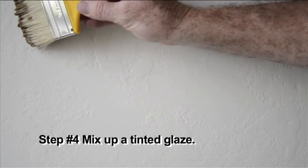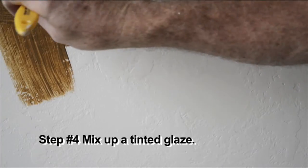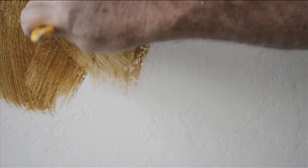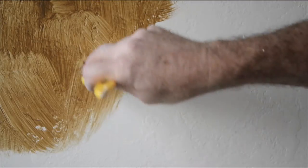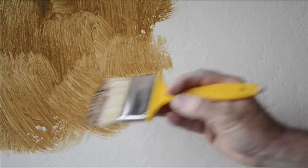After our second coat of latex paint is allowed to dry, we can mix up a tinted glaze with open-time glaze and about 25% latex paint. That's a good starting ratio. You can always add more glaze if you want a more translucent effect, or a little bit more paint if you want more solid covering.